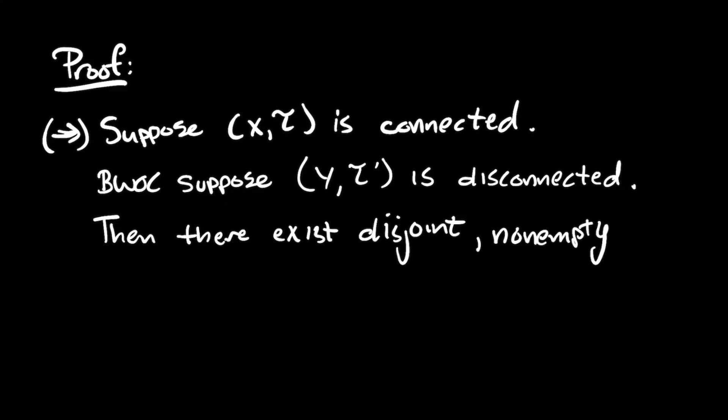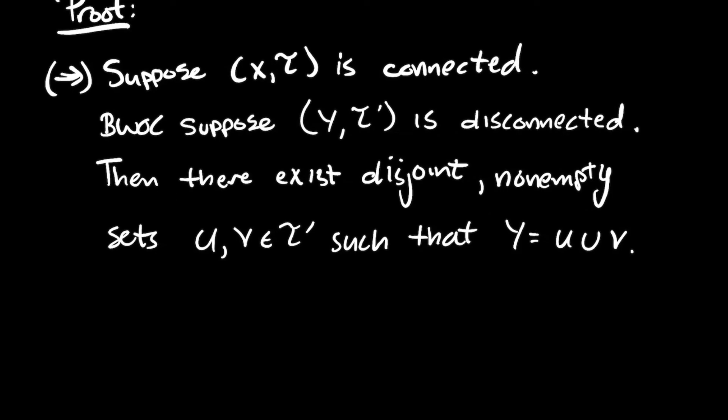Then there exist disjoint non-empty sets U and V that are open in Y, so they're in T prime, such that U union V gives you back Y. So in other words, you can break Y into these two disjoint open pieces.